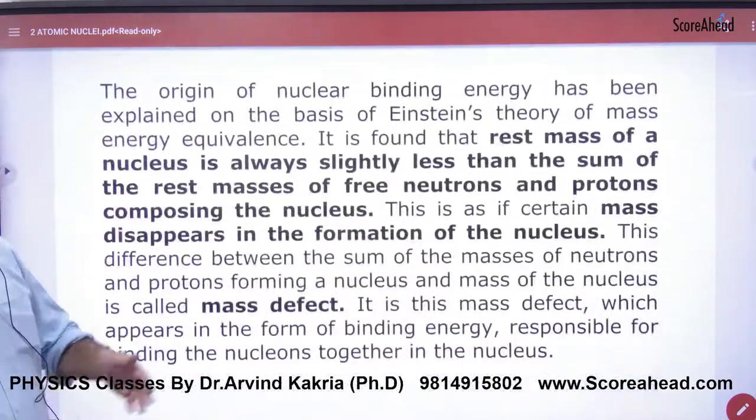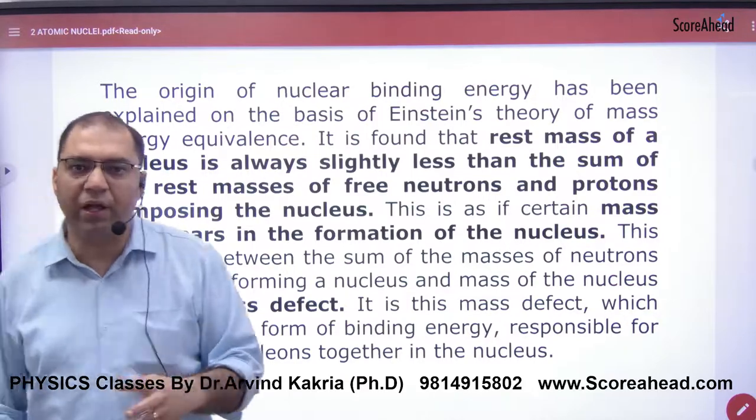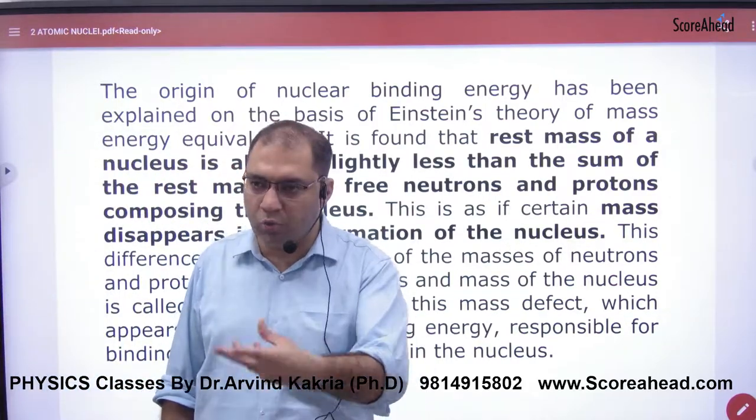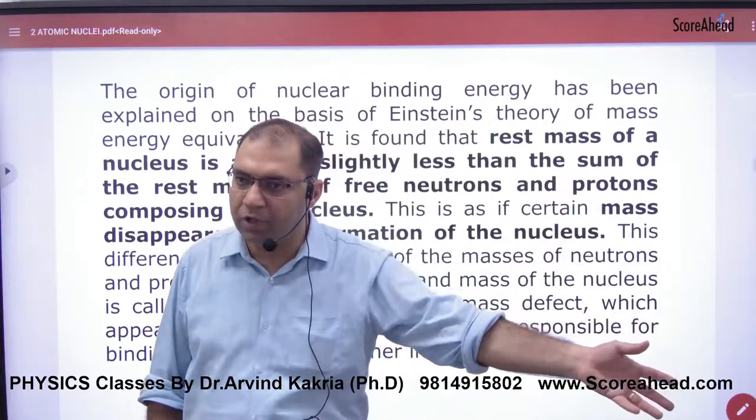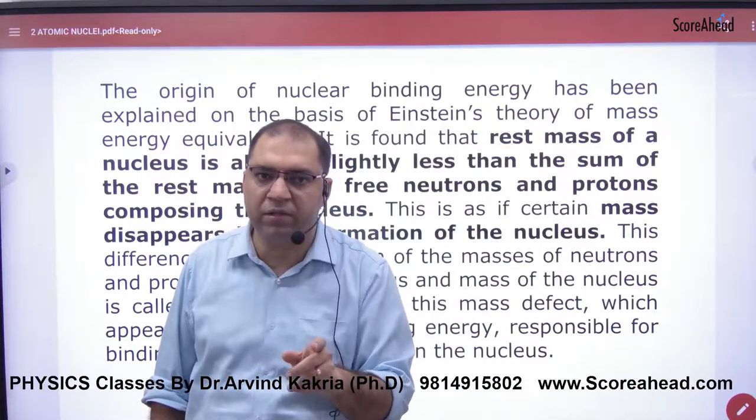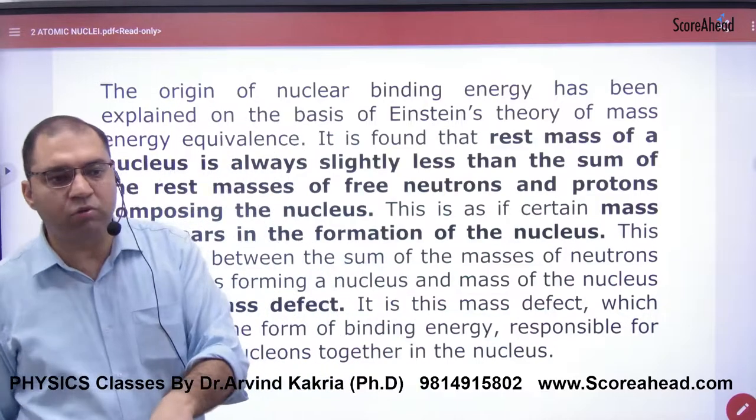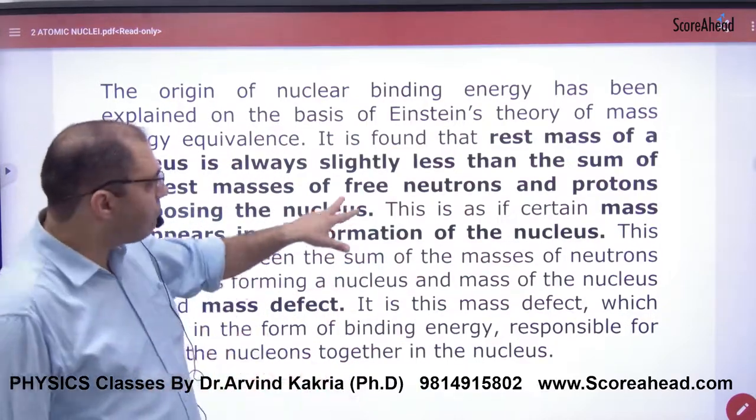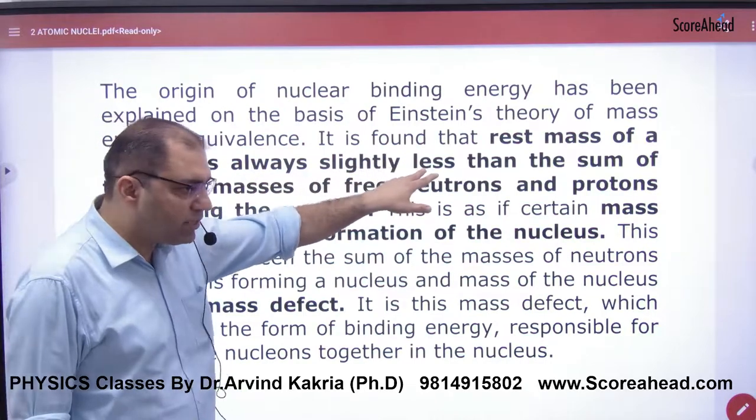Binding energy is explained as follows: if you take the individual mass of protons and neutrons separately to form a nucleus, then their individual masses of protons and neutrons will be greater as compared to the nucleus. These individual masses are called rest mass.